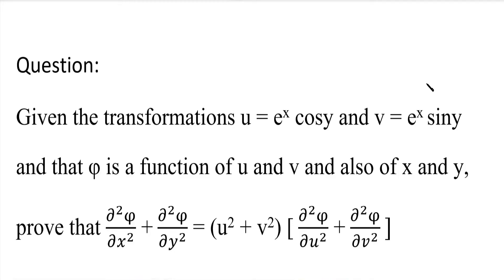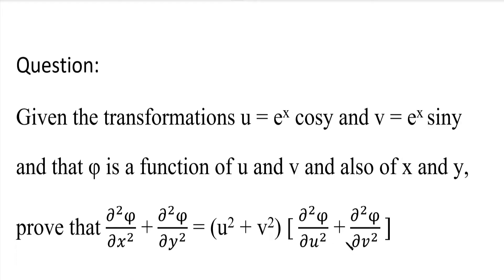Hi students. In this video, we will solve one important problem. The question is: given the transformations u equal to e power x cos y and v equal to e power x sin y, and that pi is a function of u and v and also of x and y. Then prove that dou square pi by dou x square plus dou square pi by dou y square is equal to u square plus v square, the whole into dou square pi by dou u square plus dou square pi by dou v square.